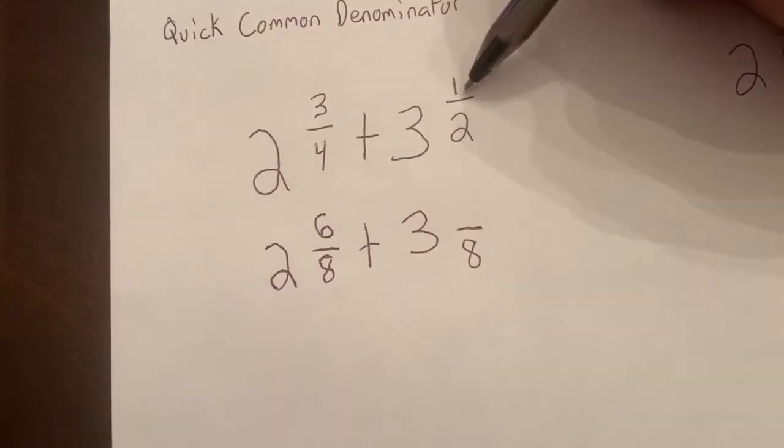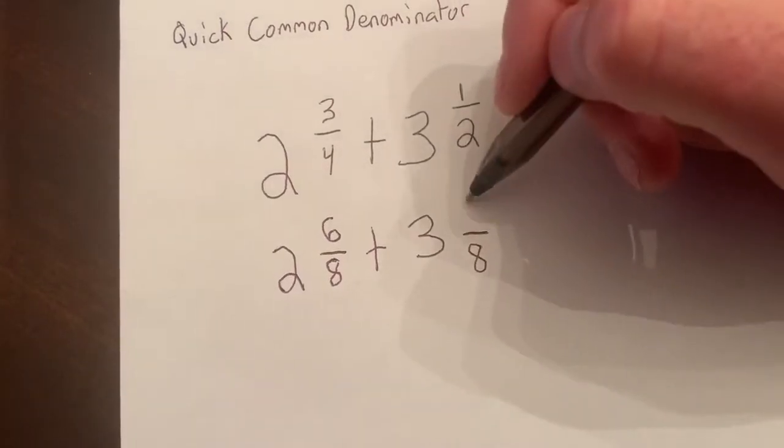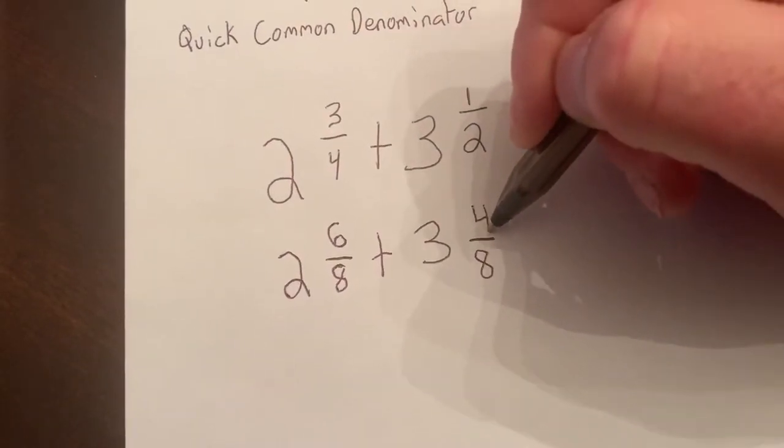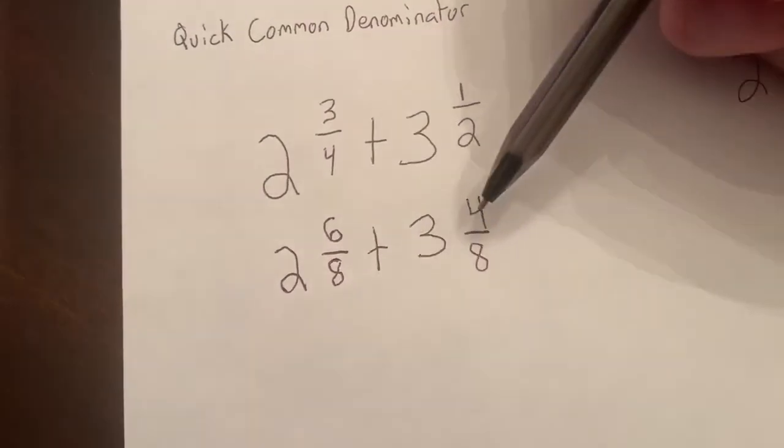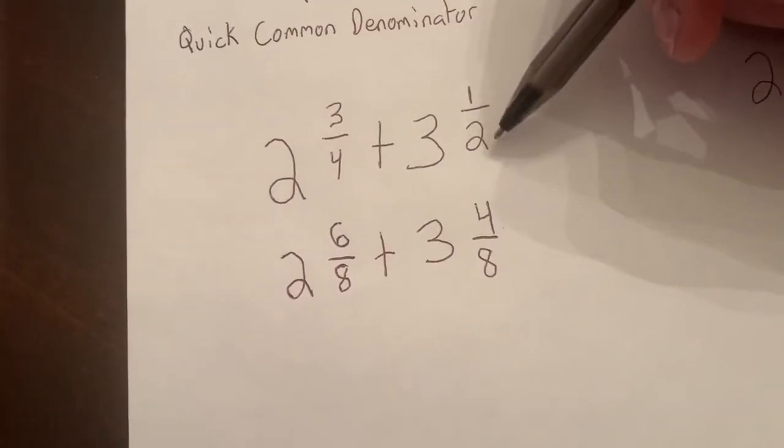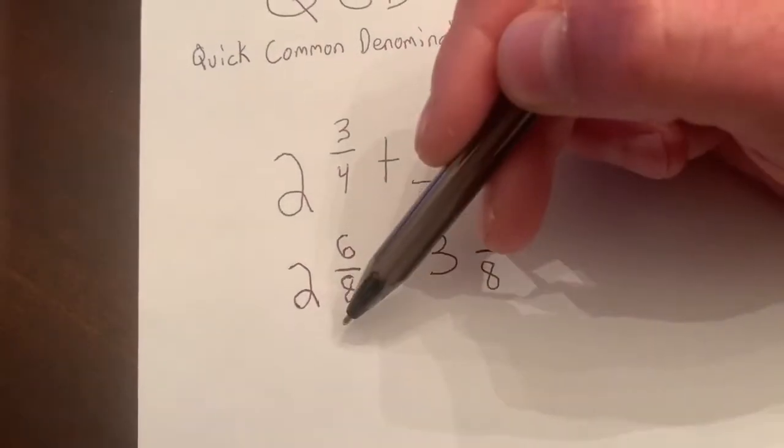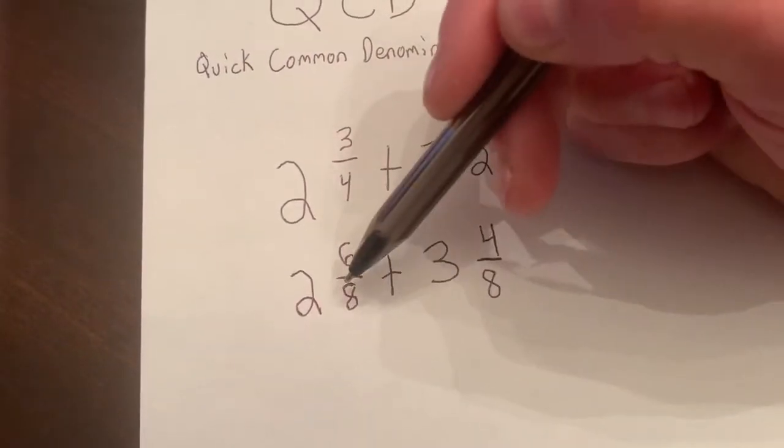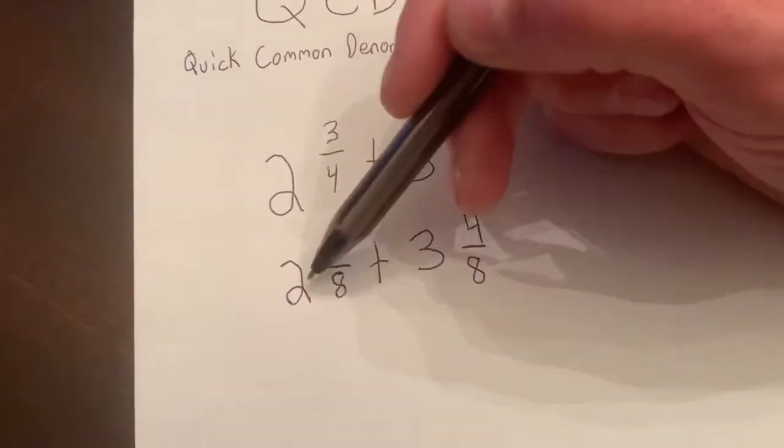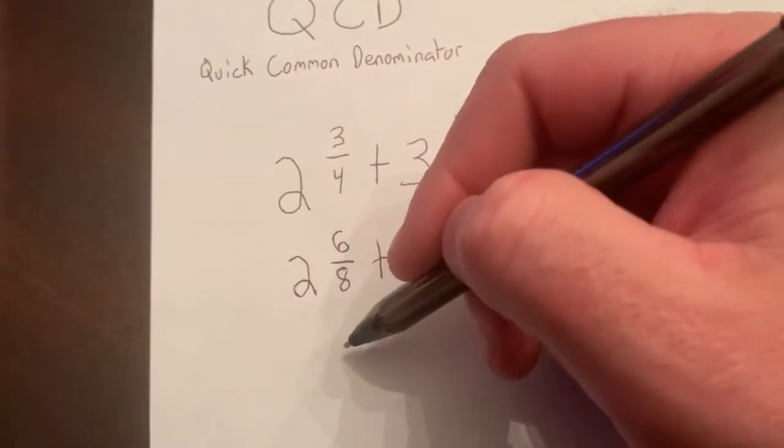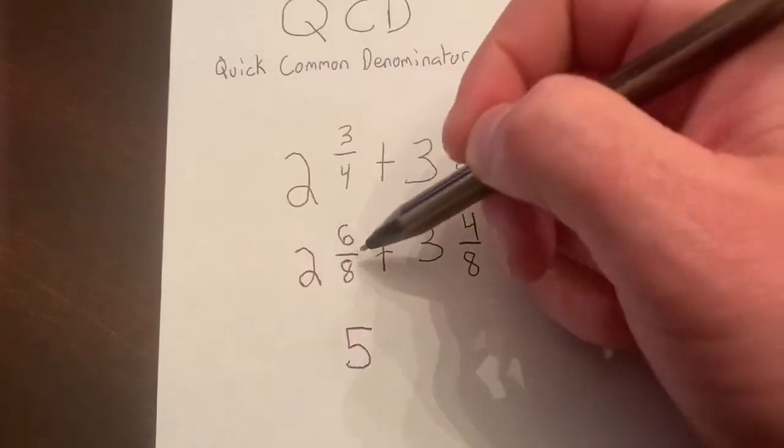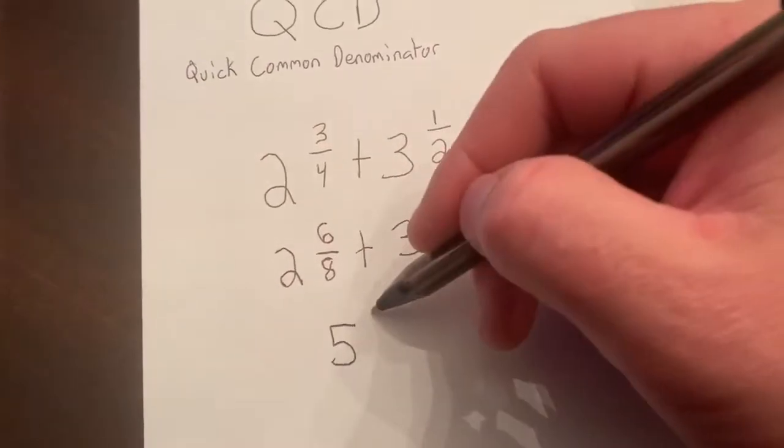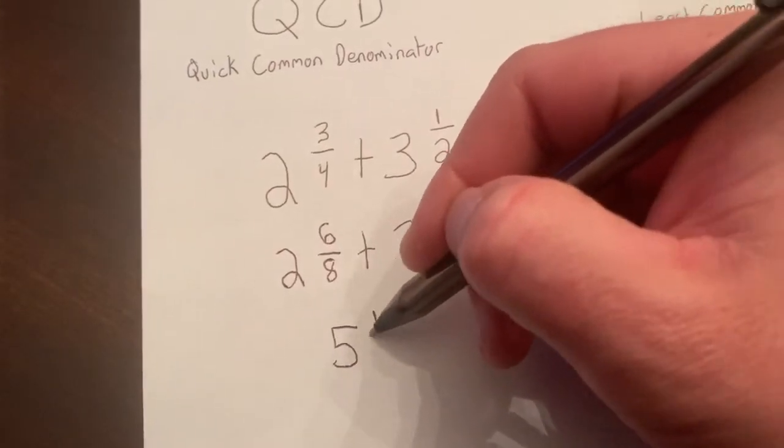Now I can do 4 times 1, which is 4. Gravity drops it straight down, and that's my numerator over here. Of course, 1 half is 4 eighths. Now that my denominators are the same, I can combine my whole numbers: 2 add 3, that's 5. And then 6 eighths add 4 eighths is 10 eighths.